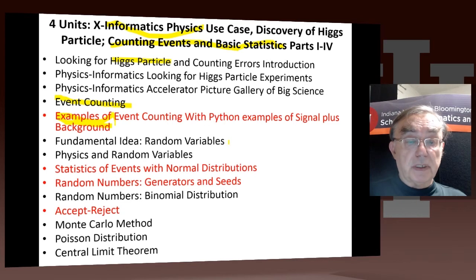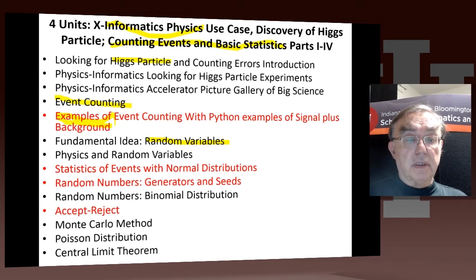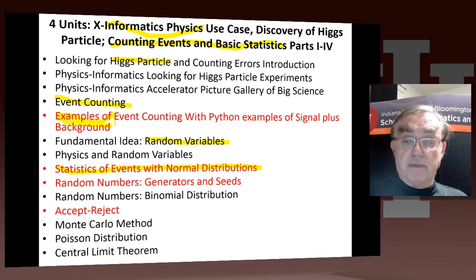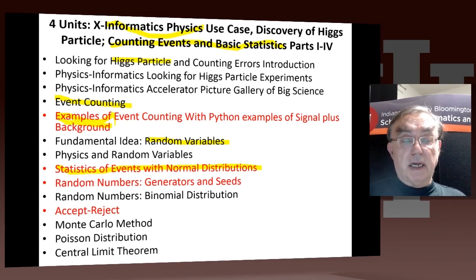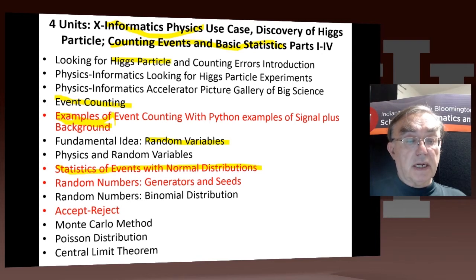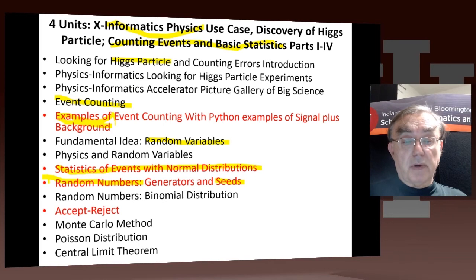We introduce some fundamental principles — using these examples to demonstrate technologies, in this case statistics and random variables. We describe how random variables are used in physics, and look at normal distributions or Gaussian distributions. Many things in physics have Gaussian distributions, because that's what happens if you just repeat the same thing many times and add up the results. We also discuss how to generate random numbers on computers, what the generators look like, and how you put seeds, so you start the generator and always get the same random numbers — or you can start at random points based on the time of day.